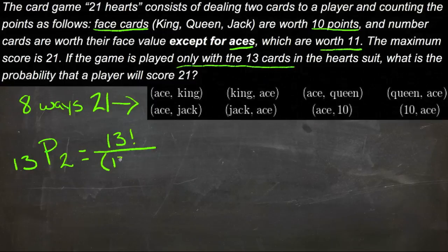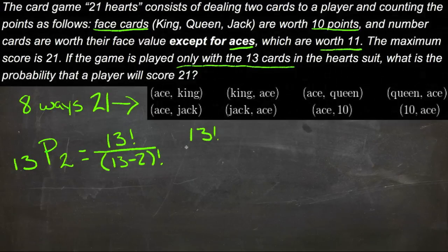Over 13 minus 2, the number of possibilities minus how many we're taking on the bottom. And make that factorial. So now we have 13 factorial over 11 factorial.